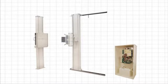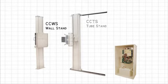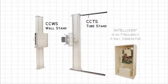The Compact Chest System features the CCWS wall stand, the CCTS tube stand, and the IntelliGen high-frequency x-ray generator.